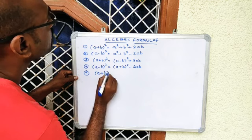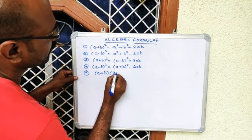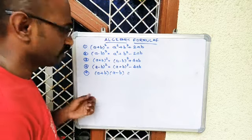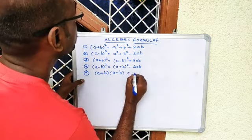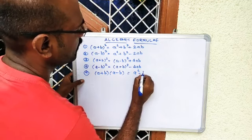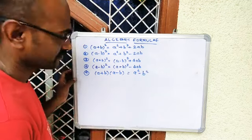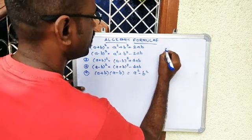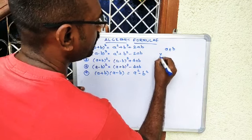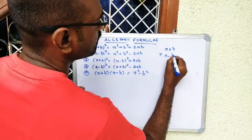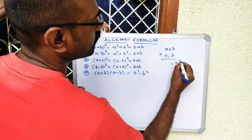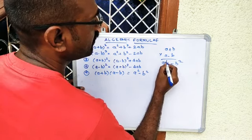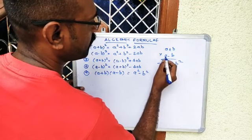Formula five: (a + b) into (a - b). In this situation, the answer is simply a² - b². We can verify: (a + b)(a - b) expands to a² - ab + ab - b².